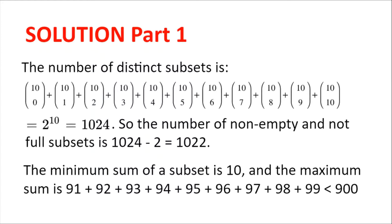However, we can't have an empty subset, and we can't have a subset which is completely full with all 10 numbers, because then the second subset will be empty. So the number of possible subsets is 1024 minus 2, because 10 choose 0 and 10 choose 10 are both 1, which is 1022.